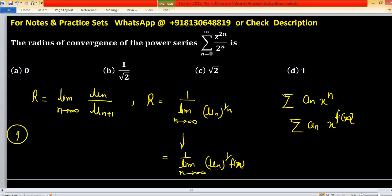For this particular problem, r equals to 1 upon limit n tending to infinity, un, this is our un, 1 upon 2 raised to the power n. un is 1 upon 2 raised to the power n, this is our un, and raised to the power 1 upon 2n.